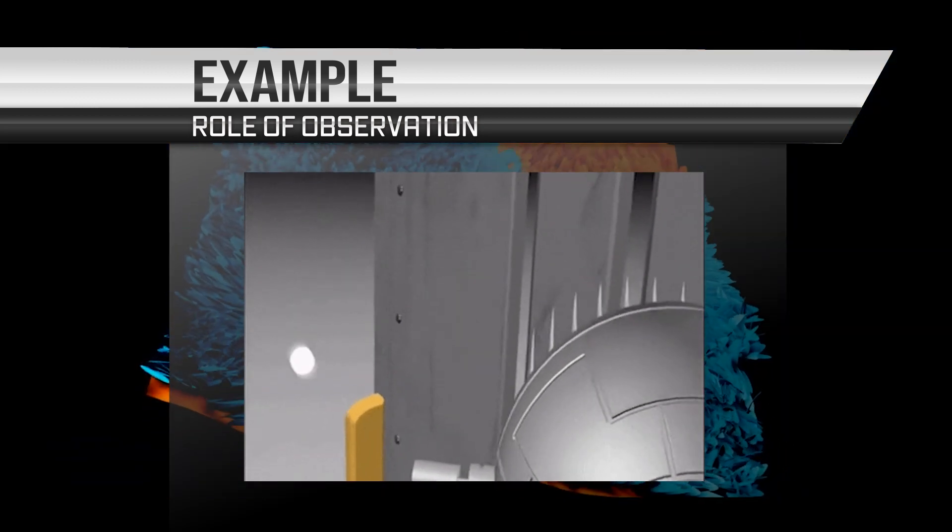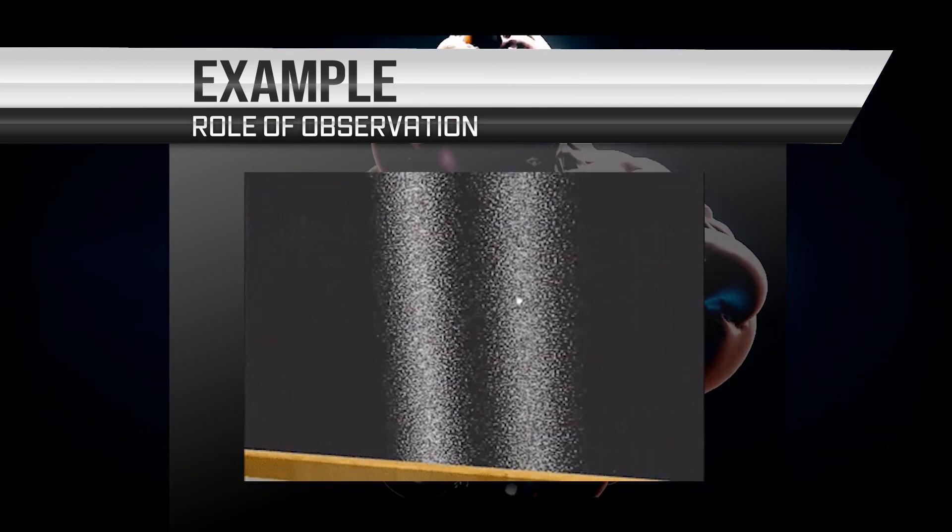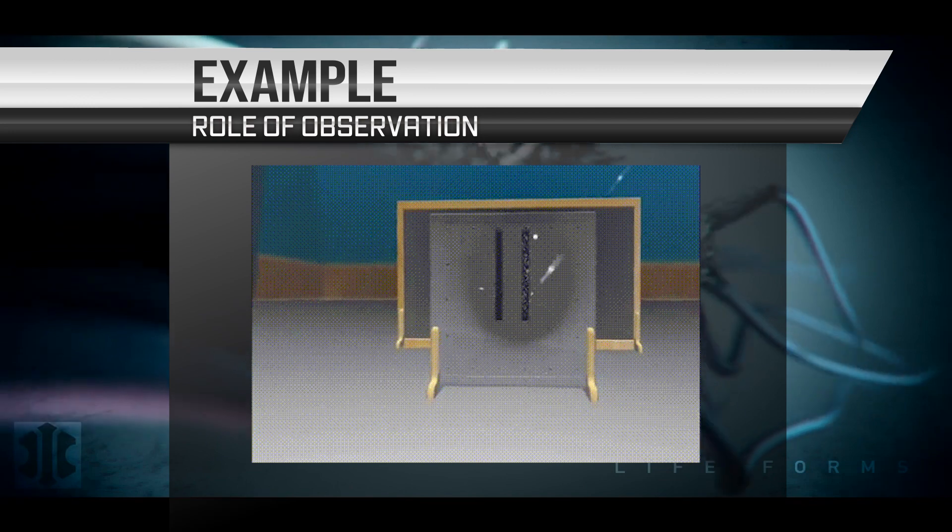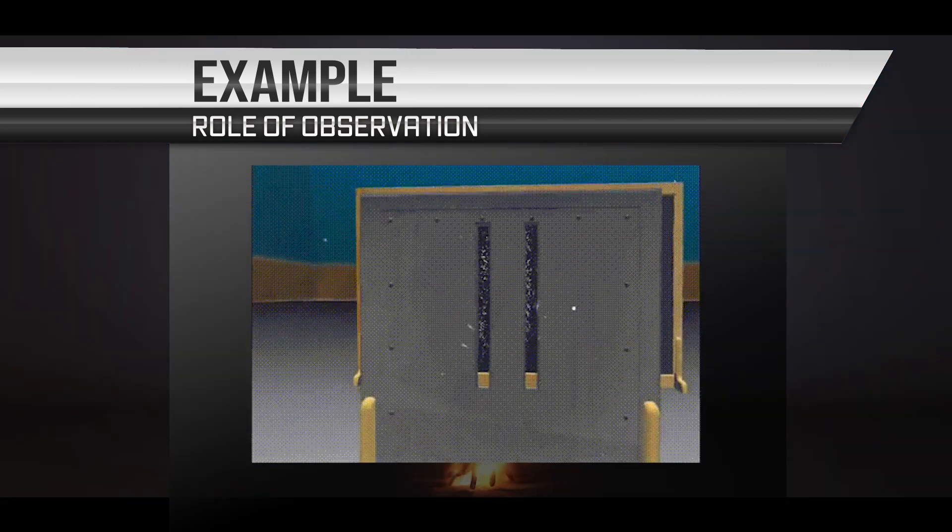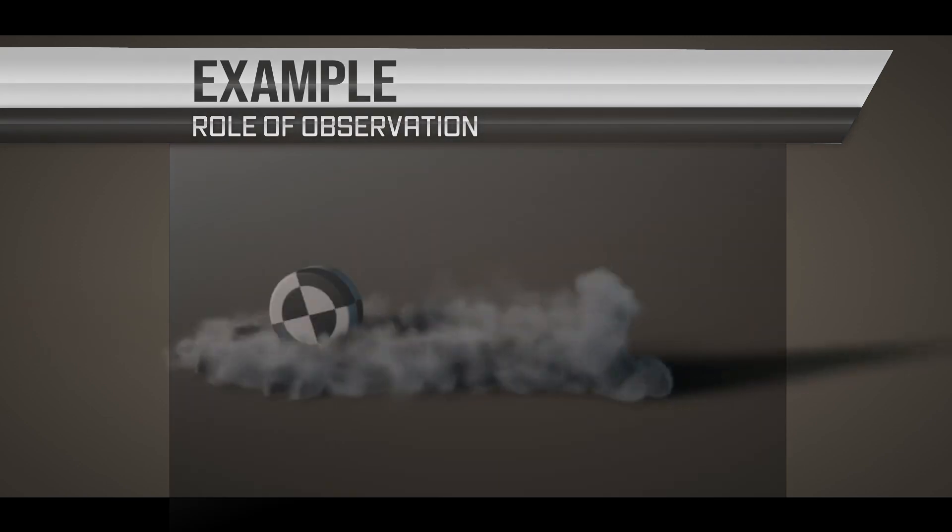However, when the position of each photon is measured as it passes through the slits, the interference pattern disappears and the photons behave like particles, creating two separate spots on the screen. This suggests that the act of observing the photons changes their behavior in some way.